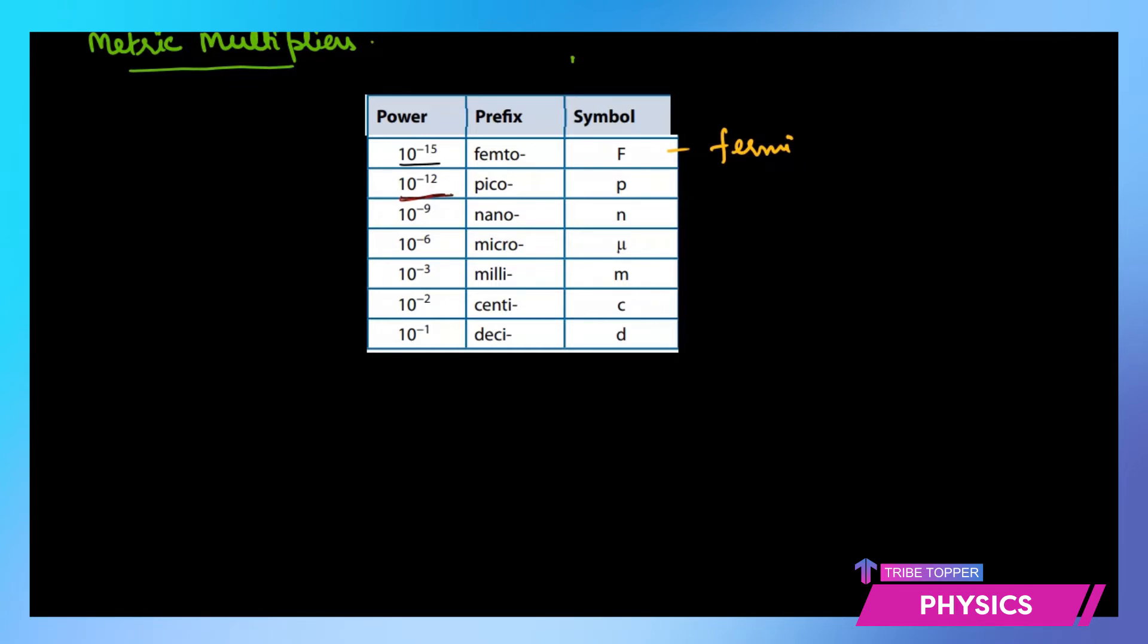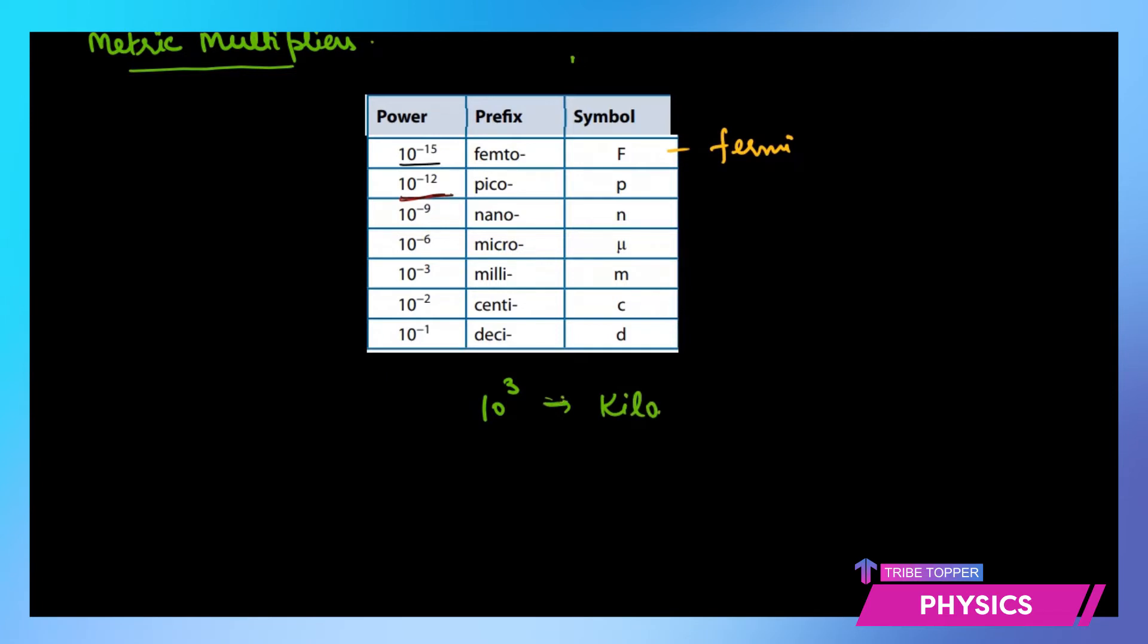So these are for the smaller values and for the bigger ones most often we use kilo which is 10 to the power 3. As you know we use it for grams, 10 to the power 3 grams is 1 kilogram. And another big unit we often use is 10 to the power of 6, that has a prefix as mega. The symbol for kilo is just k and for mega it's capital M. So these units will be required for conversion from smaller to bigger units or bigger to smaller units.